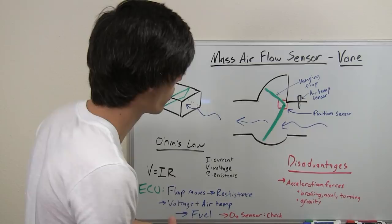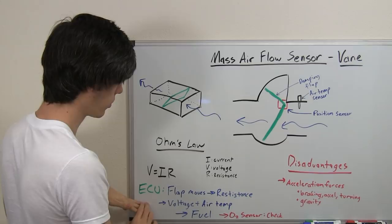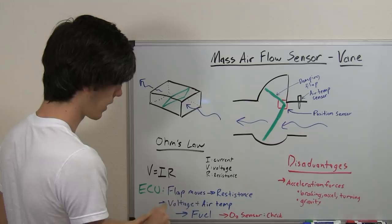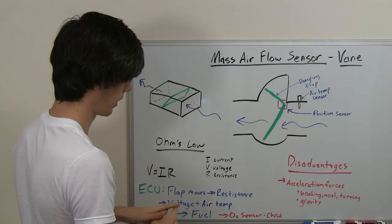Since you have a different resistance, what the ECU is going to do with that is it's going to see, okay, the flap moved and it altered the resistance. So it's going to take that altered resistance and turn that into a voltage reading and using a voltage reading, it can then determine, okay, this is how much air is coming in, I need to inject this much fuel.